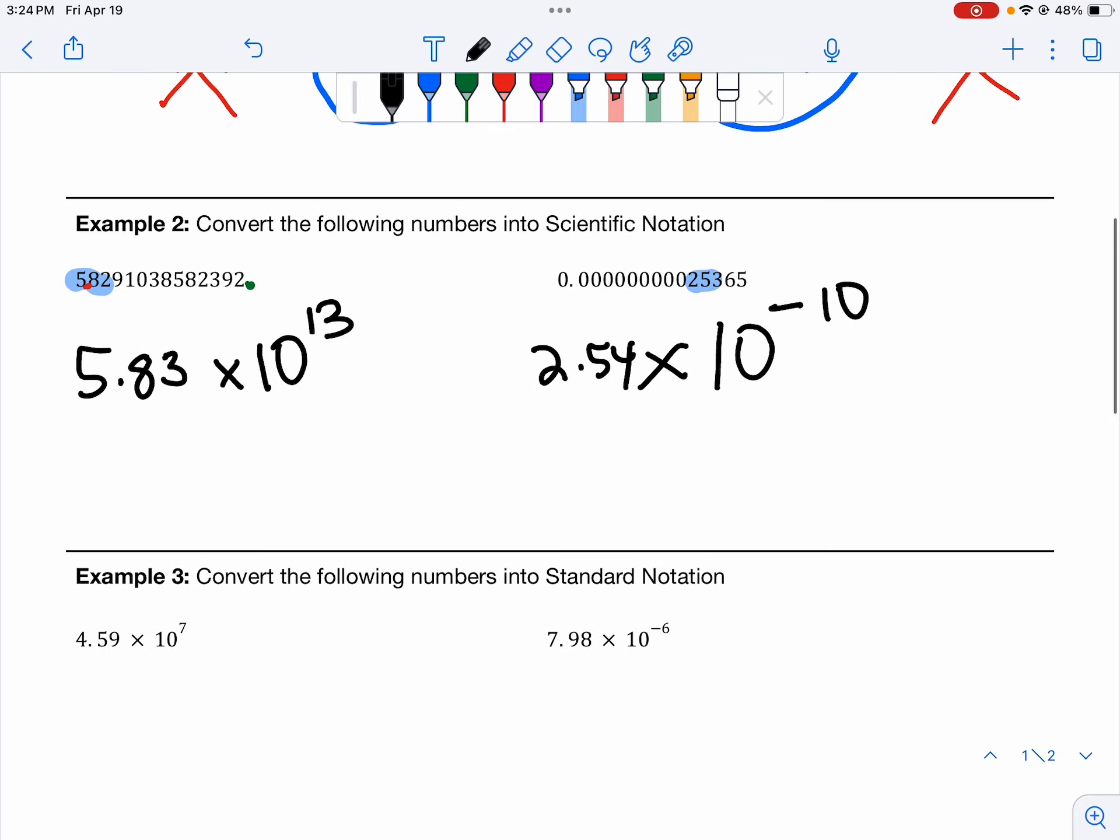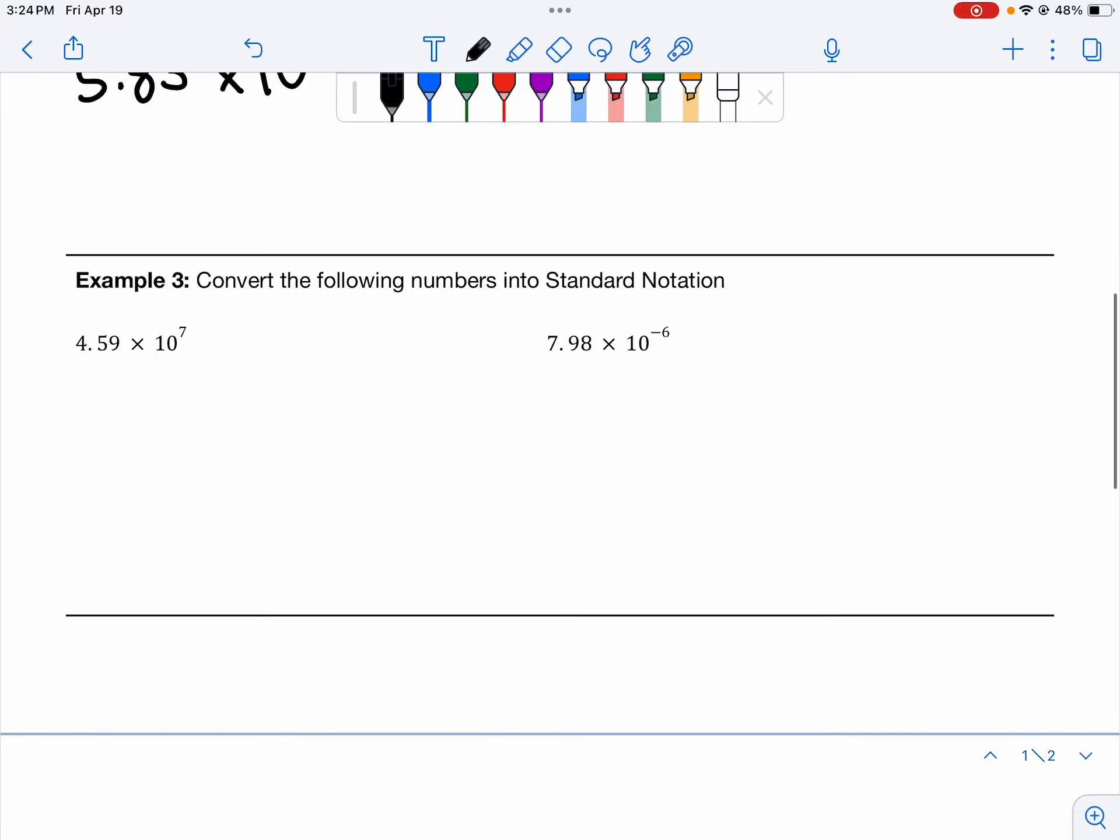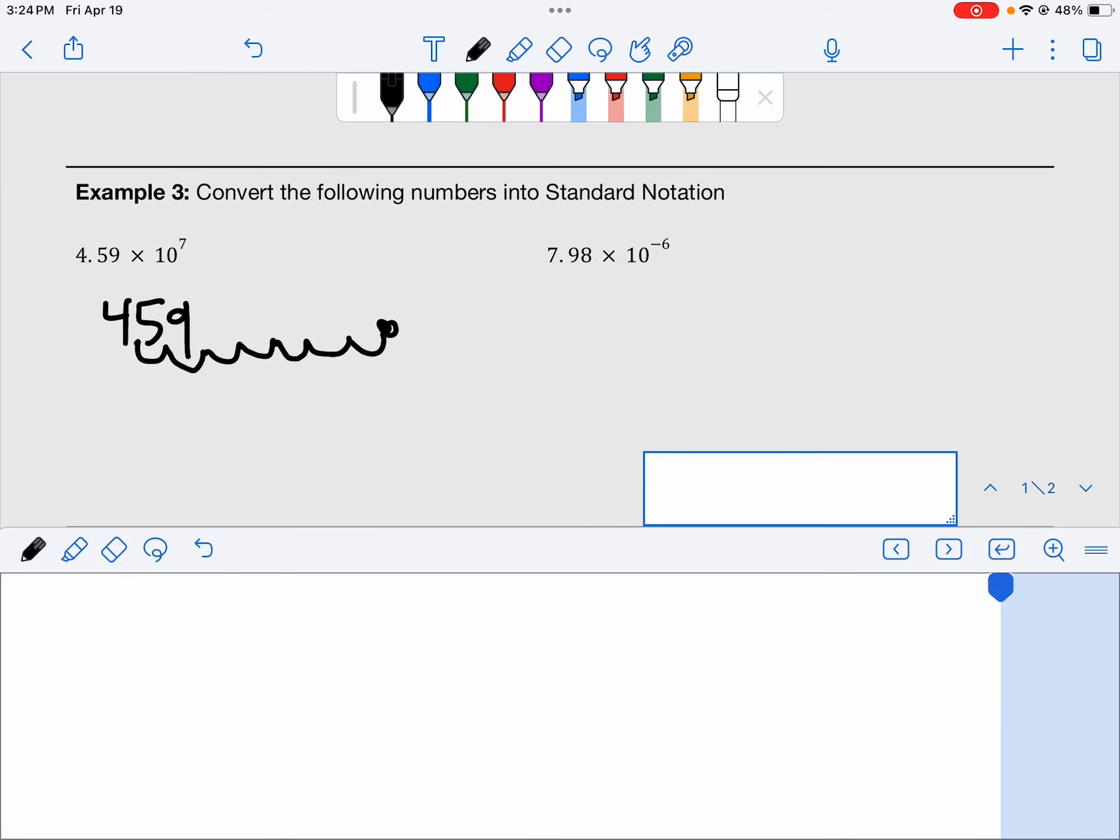All right. Let's look at going the opposite direction. Let's look at expanding numbers from scientific notation into standard notation. How do we do this? We write down the 4, 5, 9. Then the 10 to the 7th tells us to move the decimal place 7 times. So we're going to go 1, 2, 3, 4, 5, 6, 7. We're going to put our new decimal place there and some placeholders.